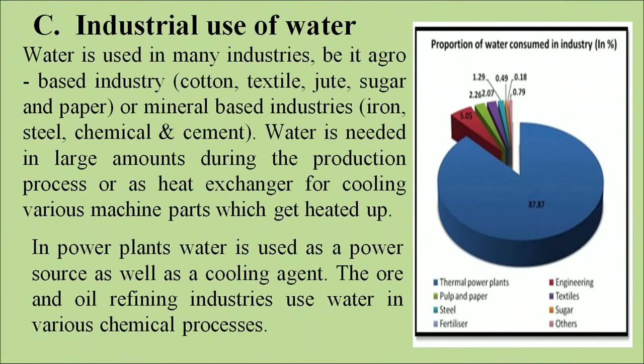Next is industrial use of water. The picture on the screen shows the split-up of the total amount of water between different aspects of commercial uses. Water is used in many industries, whether agro-based or mineral-based. Water is needed in large amounts during the production process or as a heat exchanger for cooling various machines and instruments. In power plants too, water is used as a power source as well as a cooling agent. The coal and oil refinery industries use water in various chemical processes.